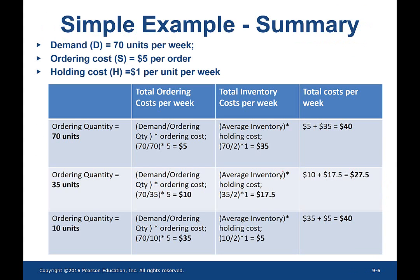Looking at the summary, the best ordering quantity for the buyer is 35 units because that's when the total cost is at its minimum. Figuring out the best ordering quantity this way in a trial-and-error fashion can be really time-consuming and cumbersome. So in order to avoid that, let's figure out a mathematical way to represent the best ordering quantity — the economic order quantity.